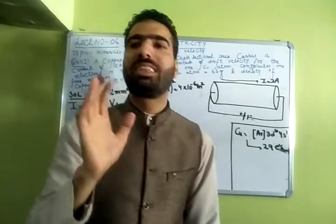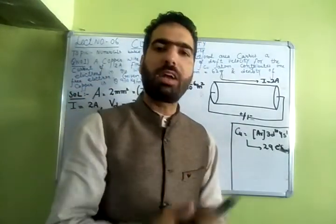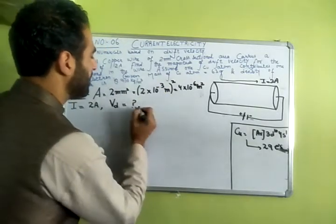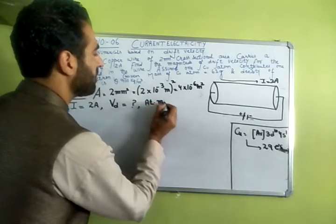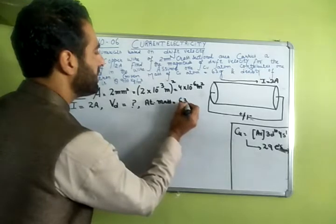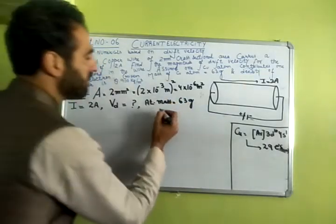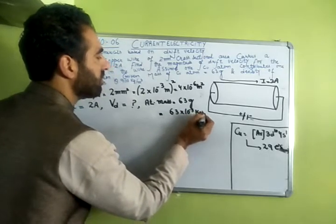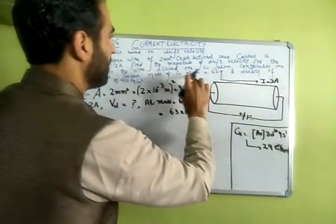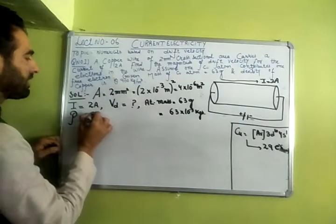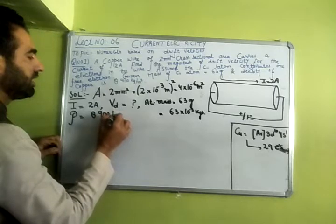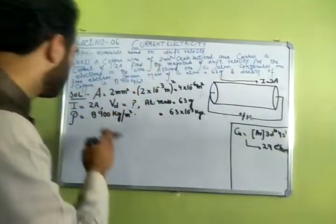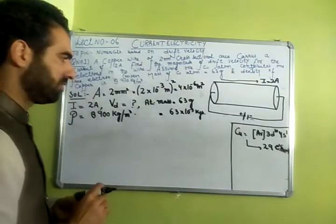Since each copper atom contributes one free electron, if there are 10,000 copper atoms, there are 10,000 free electrons. Furthermore, the atomic mass of copper is 63 grams, which can be converted to 63×10⁻³ kg. The density of copper is 8,900 kg per meter cube. So density tells us the mass of copper present in a unit volume, which is 8,900 kg.